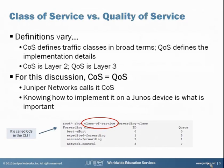You may have heard the terms class of service and quality of service and wondered if there's a difference between the two. Depending on who you talk to, definitions can vary. Some folks consider that CoS defines more broad traffic classes, whereas QoS defines the more particular implementation details. Some other people consider that CoS runs at layer two, whereas QoS runs at layer three. So no matter how it's defined, for this discussion here today, they are effectively the same thing.